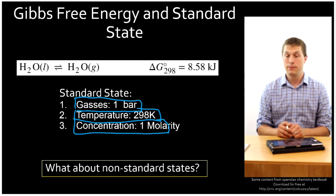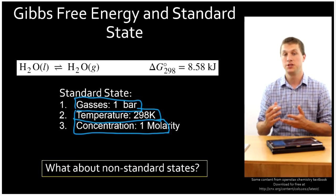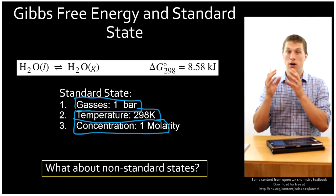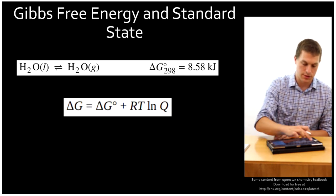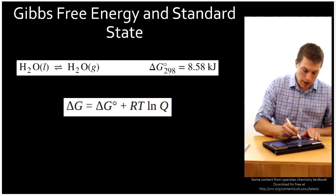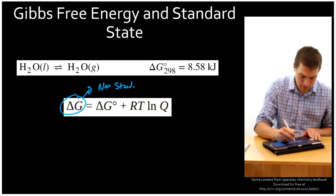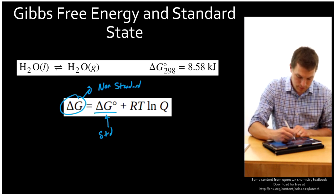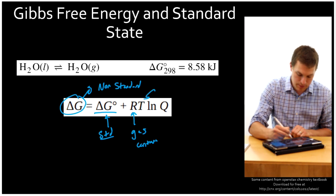But of course many times we run a reaction, it's not at those pressures or temperatures or concentrations. So what about those states? What's the Gibbs free energy change under those conditions? Well that's where we need an equation that's going to connect our standard state Gibbs free energy to non-standard Gibbs free energy. And that's what this equation does for us here. Delta G is our non-standard Gibbs free energy. Delta G with the degree sign is our standard one. R is the gas constant. T is temperature in Kelvin, and Q is our reaction quotient.